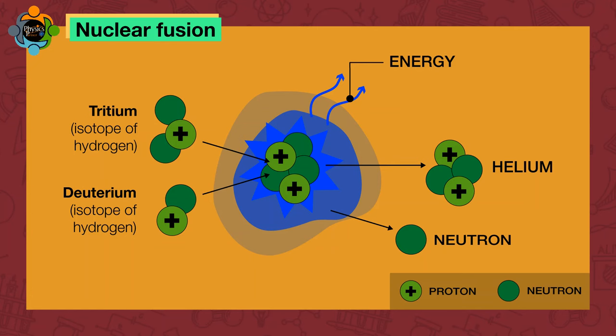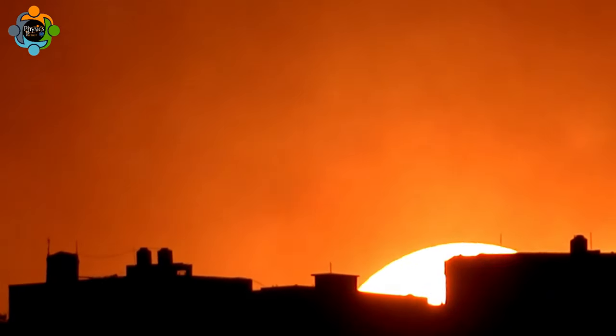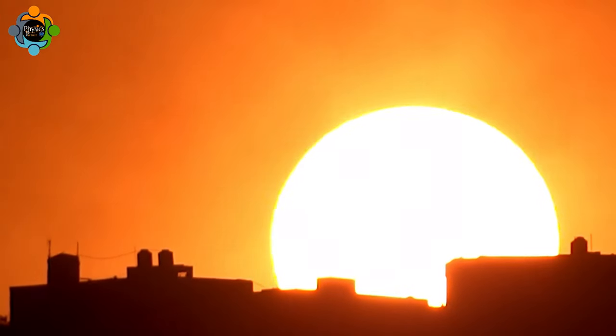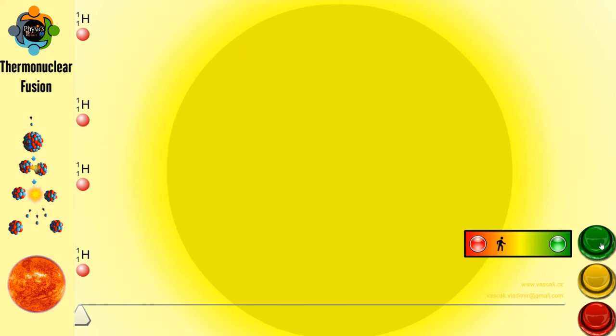Hydrogen atoms are compressed and heated to the point where they overcome their natural repulsion and fuse together. The release of energy from this fusion process is what sustains the Sun's incredible luminosity and heat.